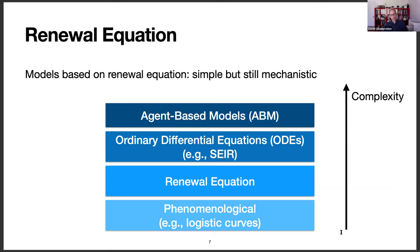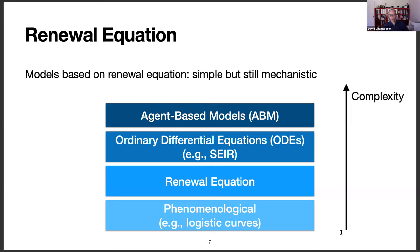There is another framework, rarely used, based on the renewal equation. This framework fits neatly between very simple phenomenological models and SEIR compartmental models. The renewal equation is relatively simple, but it is still mechanistic — it has a built-in process to describe disease transmission in a population, unlike phenomenological models. It remains relatively simple compared to compartmental ODE models.